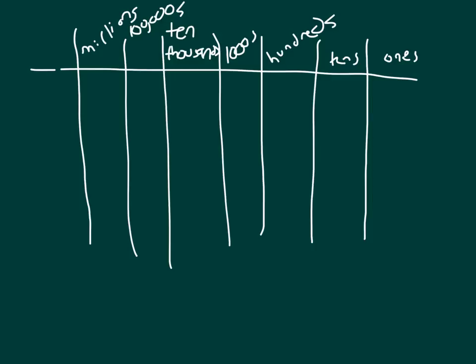You'll notice that just as there is a tens place, there is also a ten-thousands place. Just as there is a hundreds place, there is a hundred-thousands place. We also have ones, hundreds, and millions. We don't call it the one-hundreds place or the one-millions place — we just call it the hundreds place or the millions place.